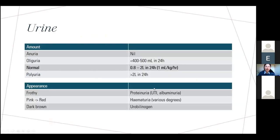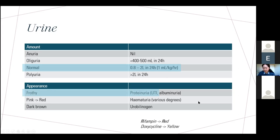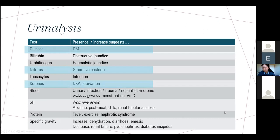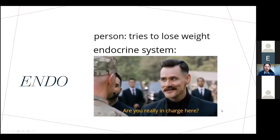On urine analysis: the most important thing is knowing what normal looks like, and frothy urine is a sign of proteinuria. There are drugs that turn urine certain colours — the bold ones are the giveaways. You don't have to do urinalysis anymore, but it's still useful to know for exam questions.